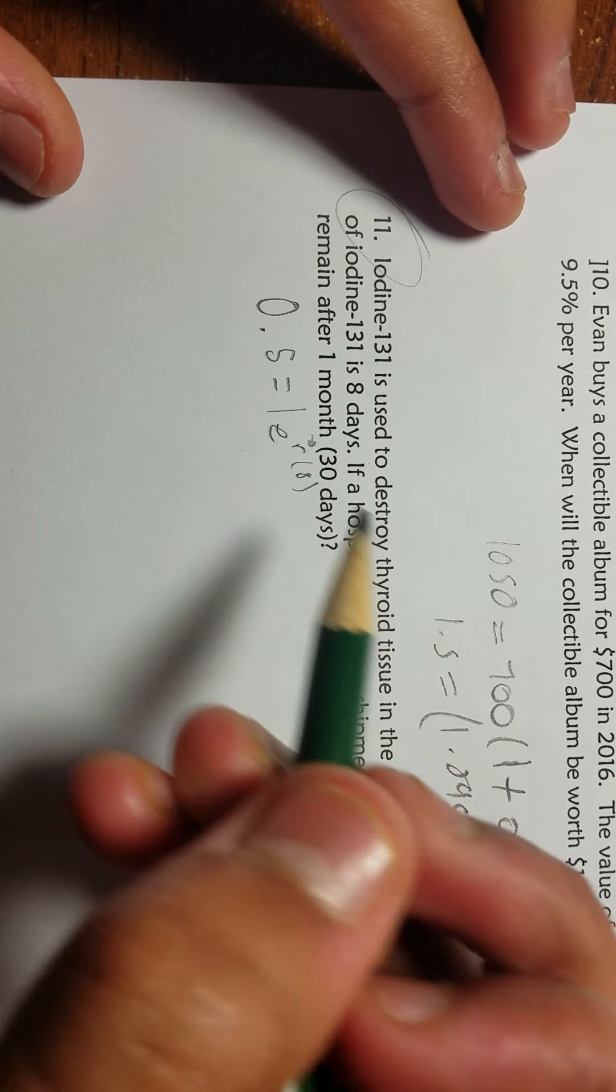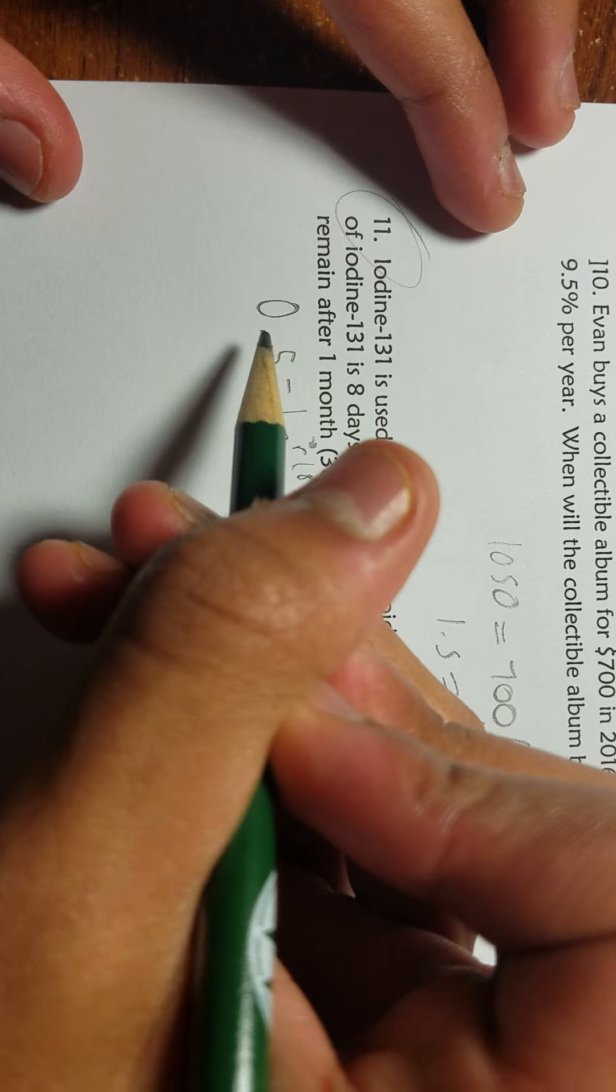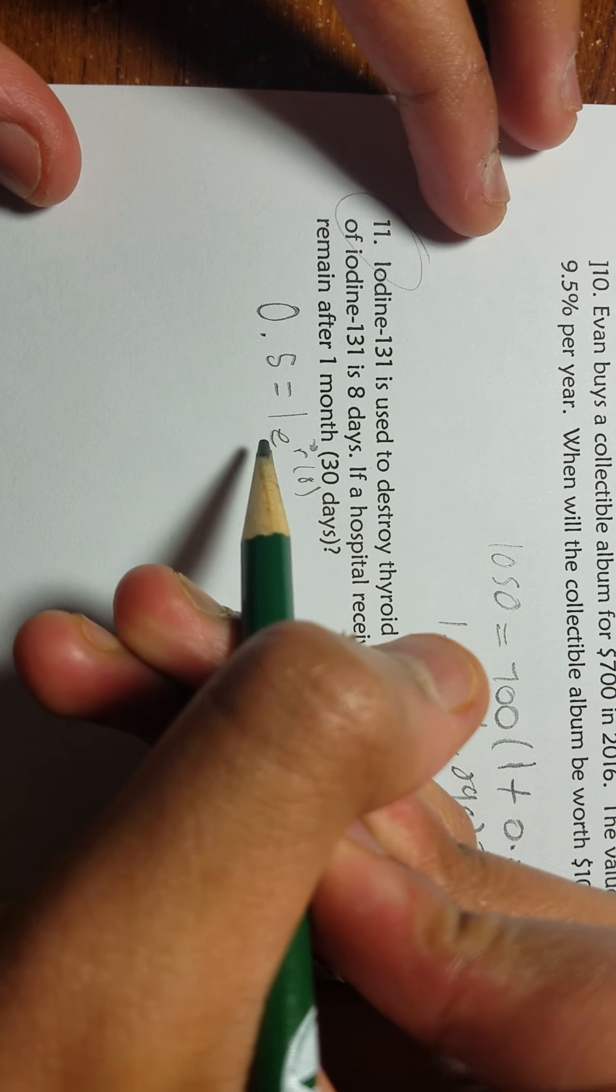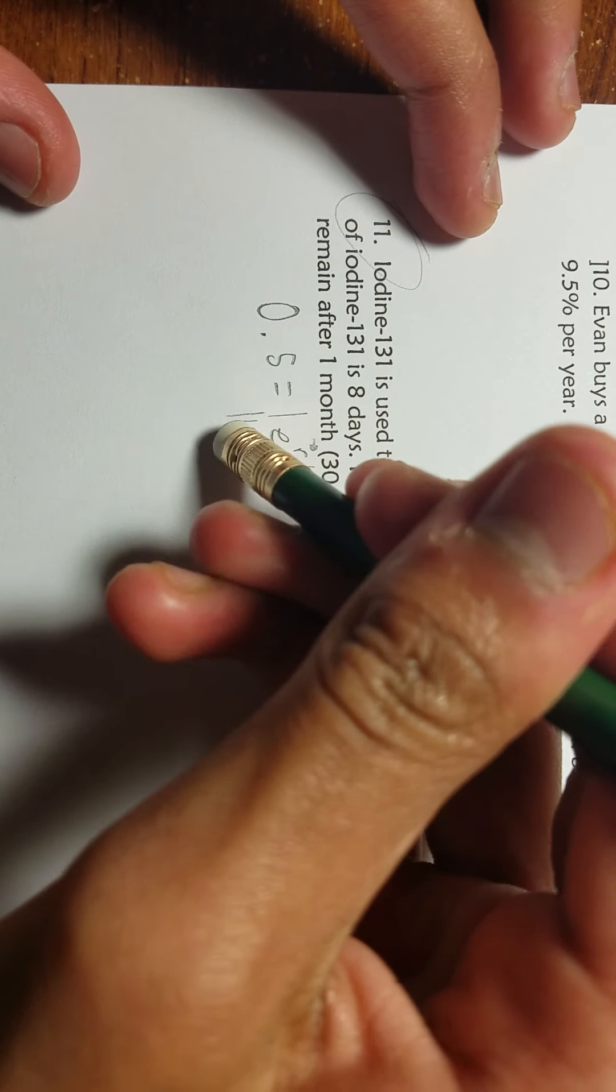Basically what we do is simple: 0.5 divided by 1 would be 0.5 still. So now we just have e^(8r) equals 0.5. To take that e out, we do natural log.